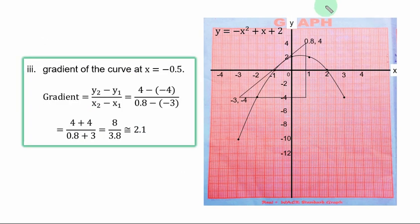Roman figure (iii), gradient of the curve at x equal to minus 0.5. In this case, you are using one line equals 0.1 on the x-axis. So this point is minus 0.5. You trace it to the curve and you draw a tangent. You draw the tangent to any length of your choice but not outside the graph. After drawing the tangent, you can form a triangle from it. From this point to this part is one point. That is when x is minus 3, y is minus 4.